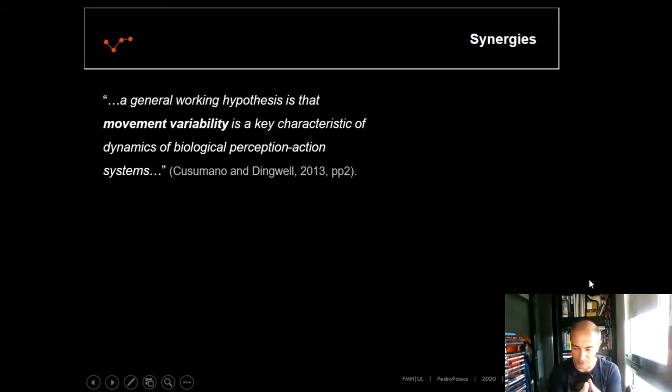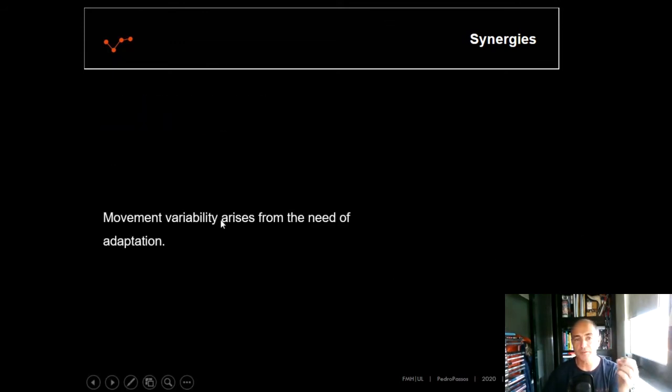A general working hypothesis of this idea of synergies is the movement variability, which is a feature of all biological perception and action systems. But why is variability so important? Because movement variability arises from the need that we have to adapt to the task and environmental constraints.